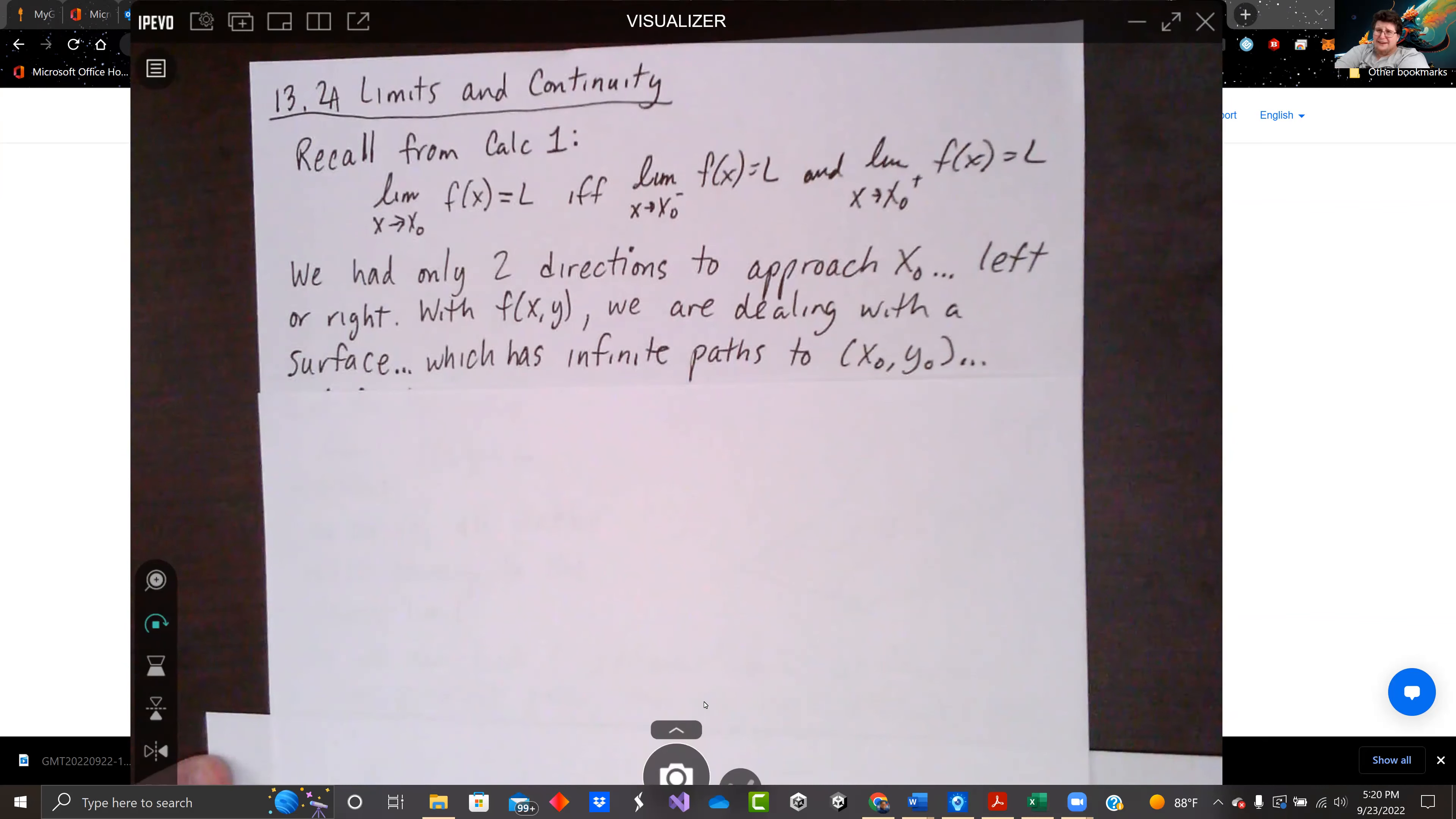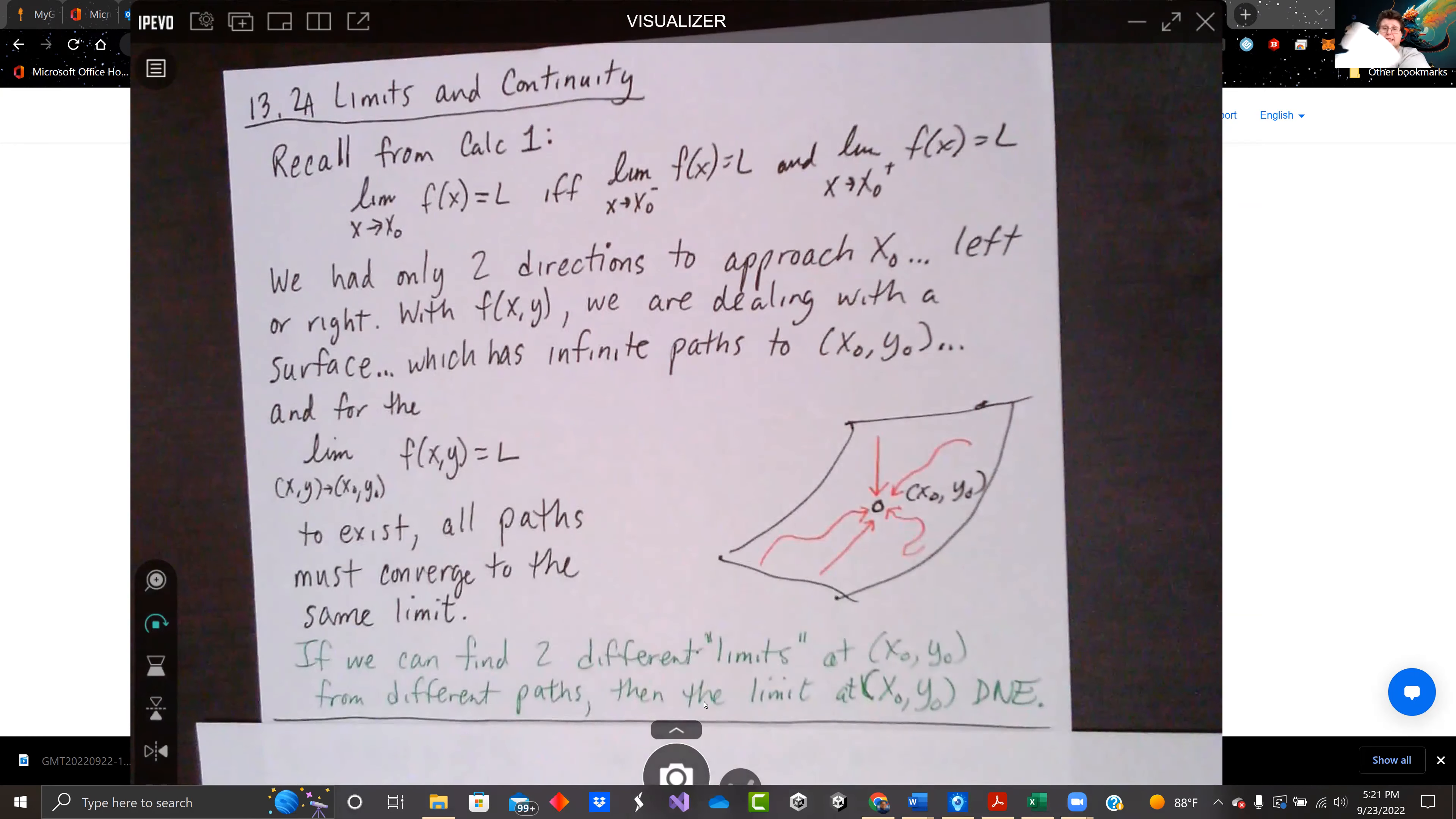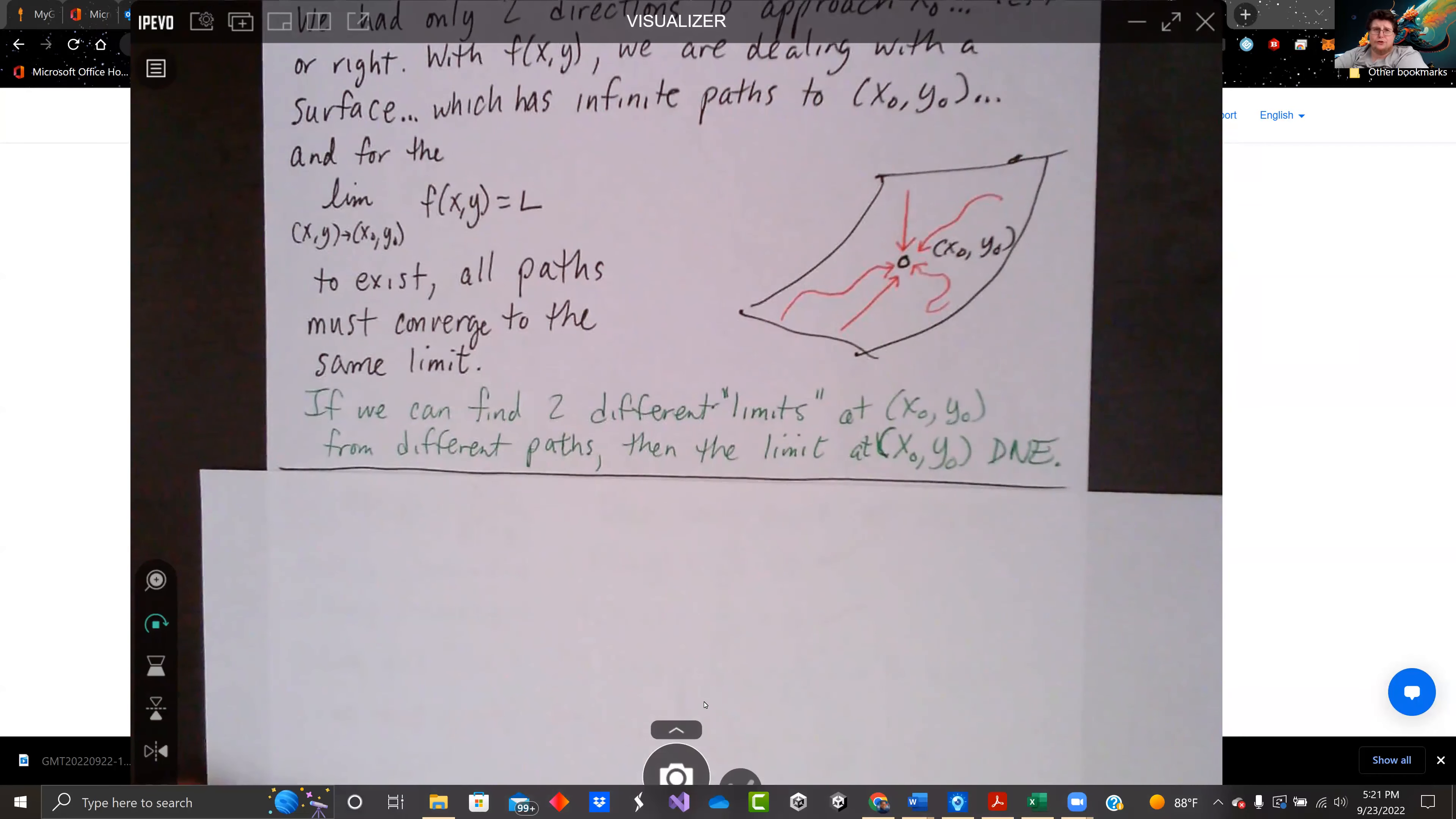When we're looking at f(xy) though, we've got a surface, which means there's a lot of paths we can choose from. Now we're going to a point (x0,y0). So for the limit as (x,y) approaching (x0,y0) to exist for it to equal L at f(xy), it has to exist for all paths, and it must converge to the same limit for every single path that you can take.